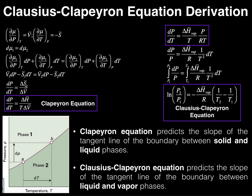The change in molar entropy is somewhat difficult to measure, so we want to put this in terms of something else that's easier to measure. Recall that entropy S equals the corresponding enthalpy H divided by T. So we can substitute the change in molar entropy for delta H molar divided by T. Making that substitution gives us the Clapeyron equation: dP/dT equals delta H molar divided by T, divided by the change in molar volume.